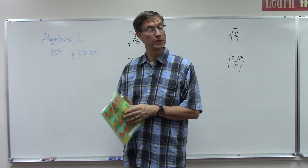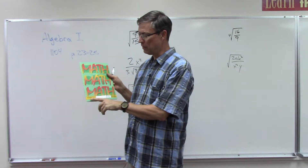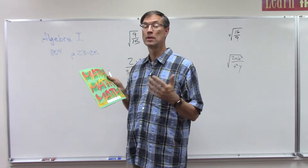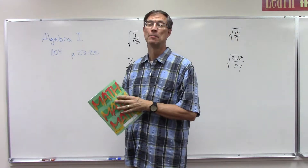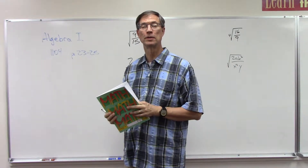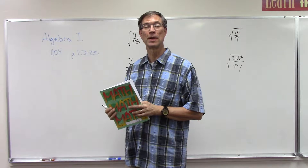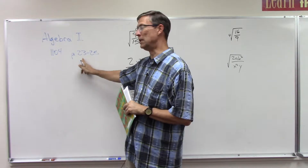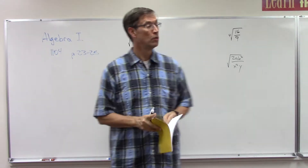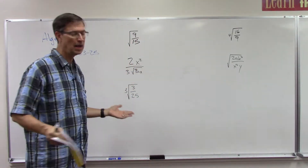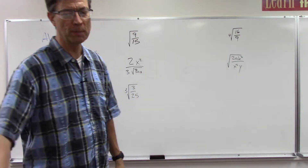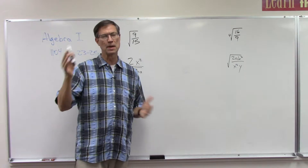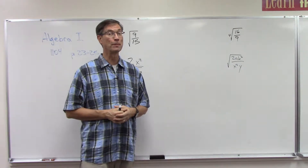I'm doing a quick lesson tonight for Algebra 1104, it's the eighth pace. I'm actually doing this in September because I have a student who contacted me via the contact form and said they need a lesson on how to do pages 23 through 25, which is rationalizing the denominator. I'm going to show you a slightly easier way than the five or six step method that the pace talks about.